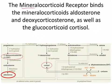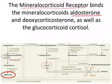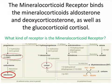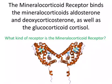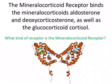One thing to realize is that the mineralocorticoid receptor binds several different mineralocorticoids — it binds tightly to aldosterone, but also to deoxycorticosterone and to cortisol. That has important implications when the levels of these different hormones are off. The mineralocorticoid receptor is a steroid hormone receptor, or nuclear hormone receptor — meaning it's a transcription factor. When it binds its hormone, it is activated and moves from the cytoplasm into the nucleus, where it homodimerizes and binds to hormone response elements in the promoters of specific genes and activates their transcription.